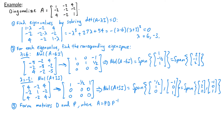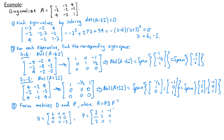Now we're ready to form the diagonal matrix D and the matrix P. D is the diagonal matrix containing the eigenvalues, so that's 6, 0, 0, 0, negative 3, 0, 0, 0, negative 3. And P has columns that are the corresponding eigenvectors: 2, negative 1, 2, then 1, 2, 0, and lastly negative 1, 0, 1.